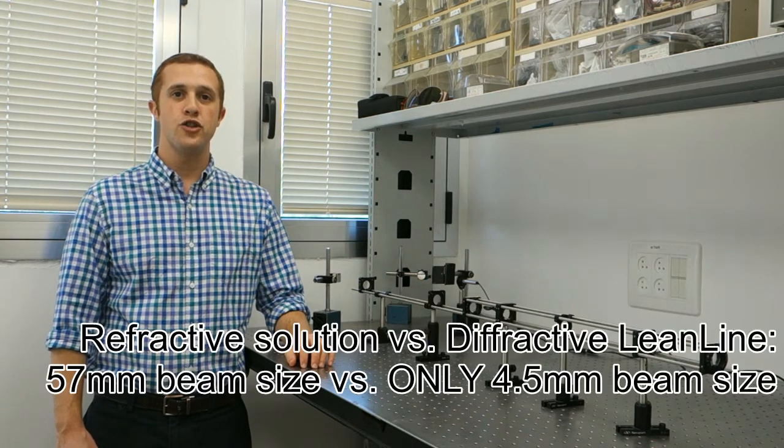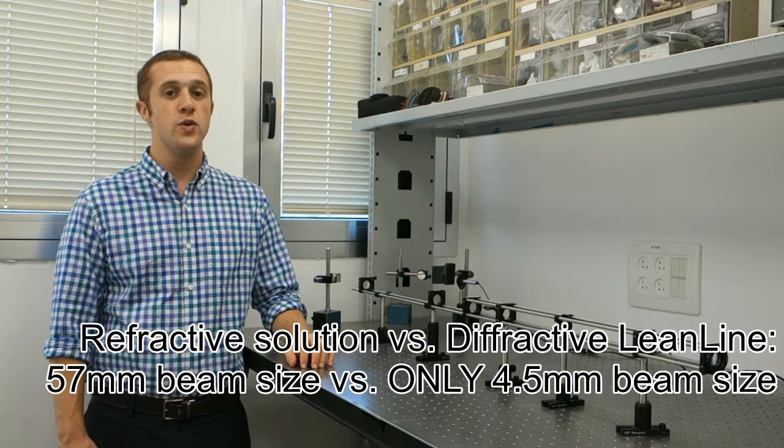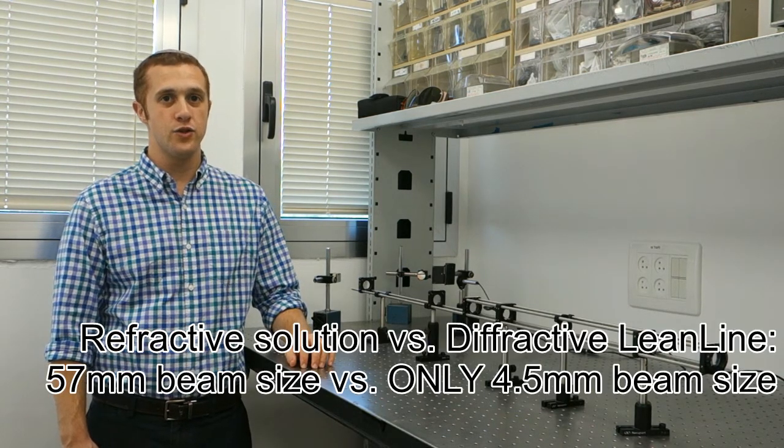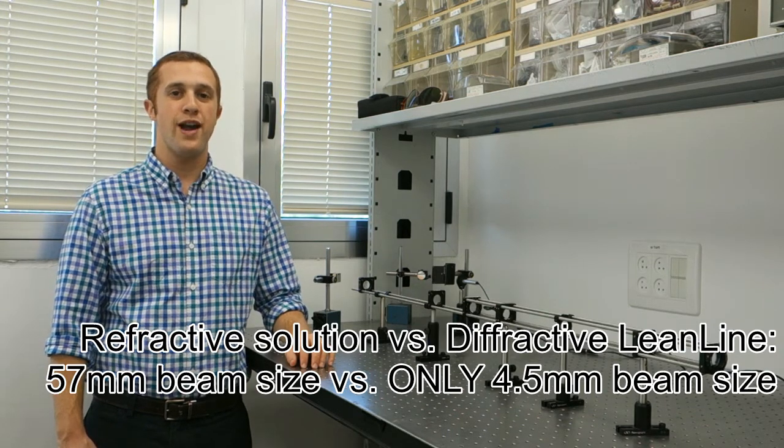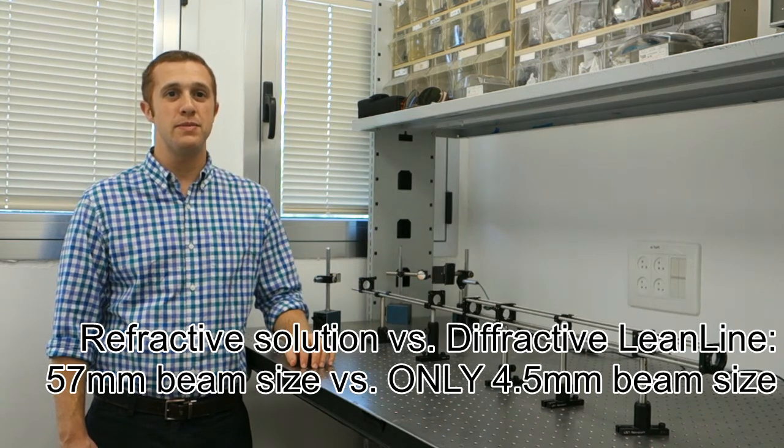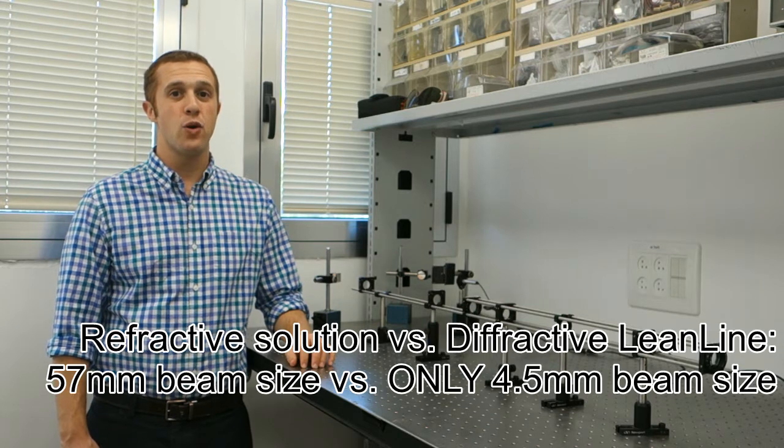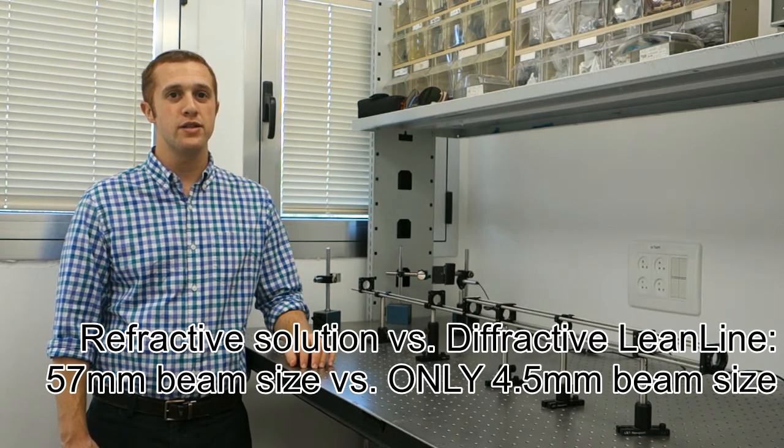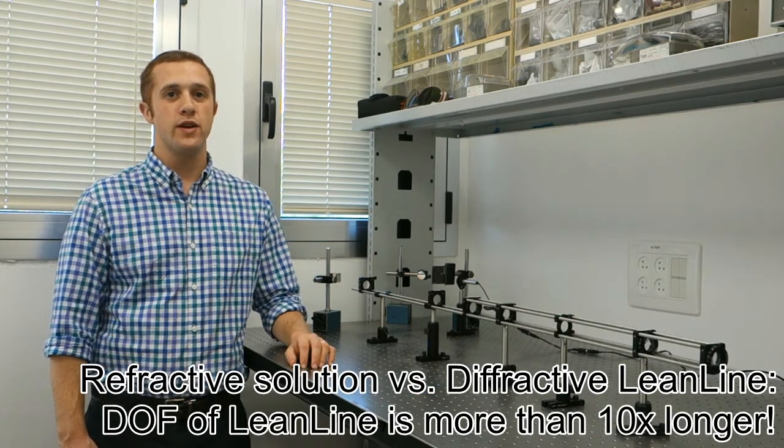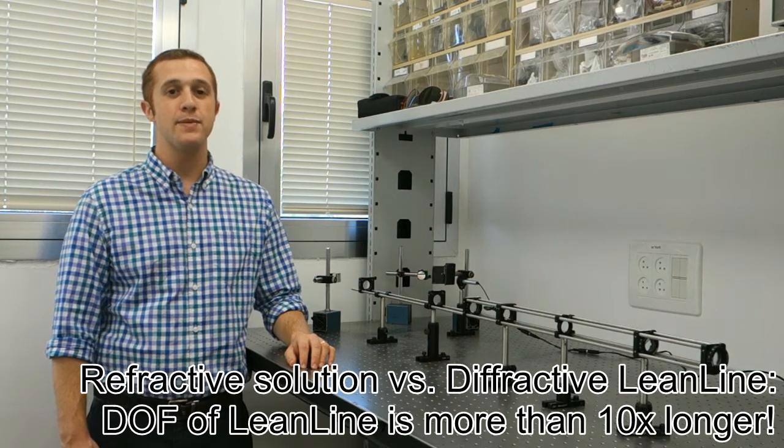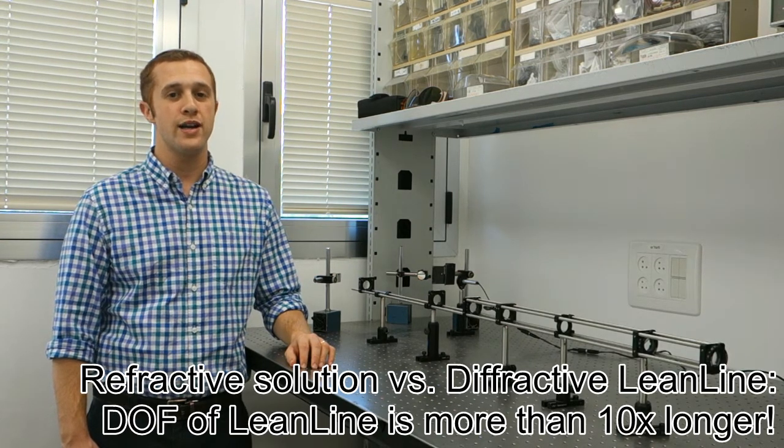When comparing a traditional refractive solution to the new diffractive lean line solution, traditional optics requires a 57-millimeter beam size, when the lean line requires only 4.5 millimeters. Moreover, the depth of focus of the lean line is more than 10 times longer than that of a traditional refractive optics solution.